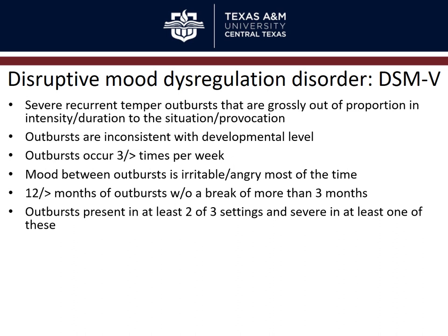The outbursts must be present in at least two of three settings and severe in at least one. This requirement exists because if it only happens at home with one parent but the child is fine with the other parent, at school, and in all other settings, the problem may be about that specific relationship rather than the child. Seeing symptoms in more than one setting suggests something is going on with the individual rather than being a symptom of someone else's pathology.